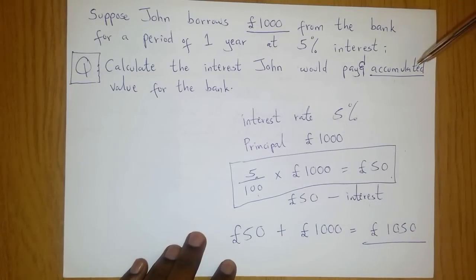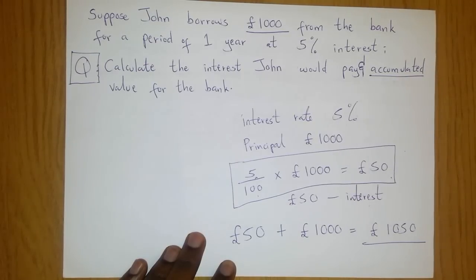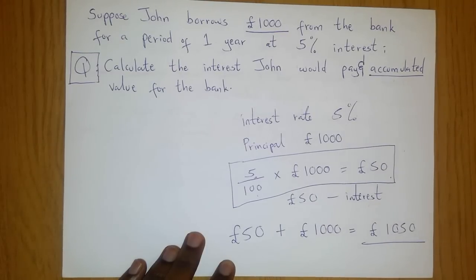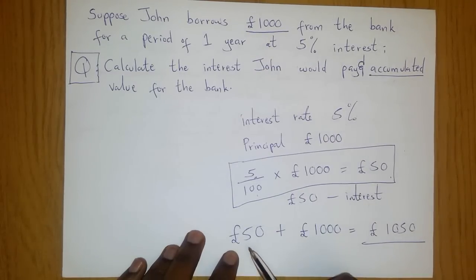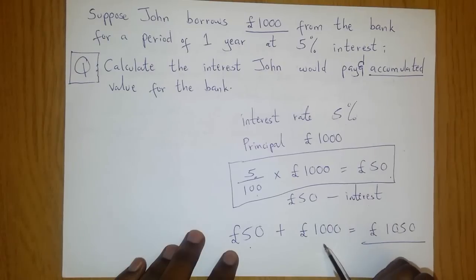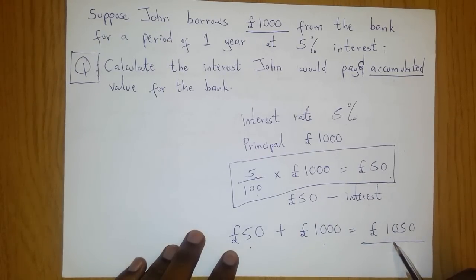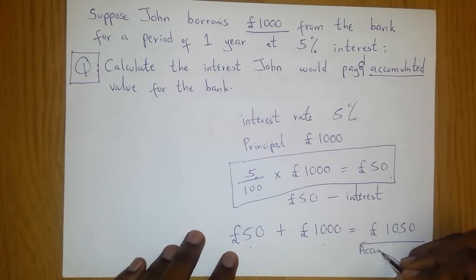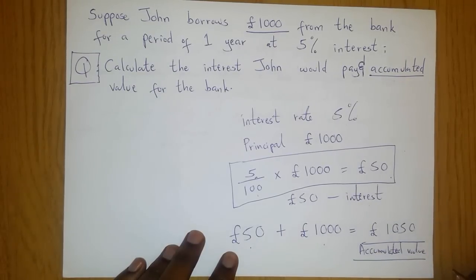50 pounds is our interest. The second part asks us to calculate the accumulated value. At the end of the year, John would have to give back the 1,000 pounds he initially borrowed from the bank, and on top of that, he would also pay the bank interest. Our interest was 50 pounds and the amount John borrowed was 1,000 pounds. So the interest plus the principal gives you the accumulated value for the bank: 1,050 pounds.